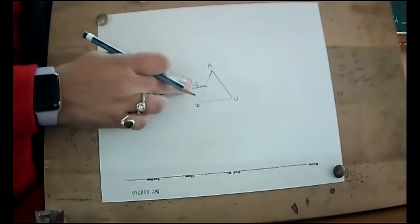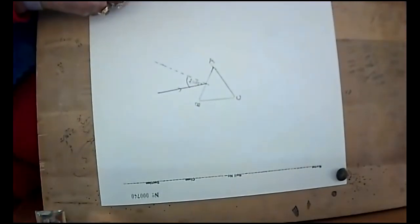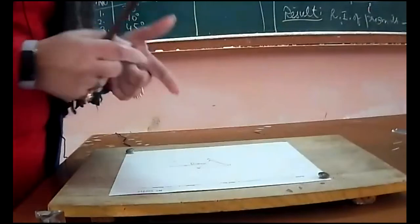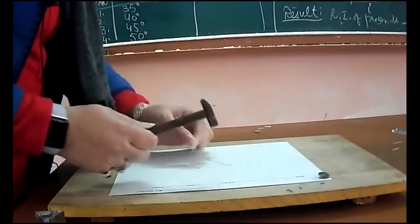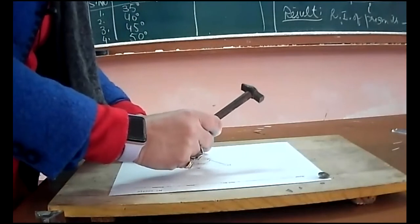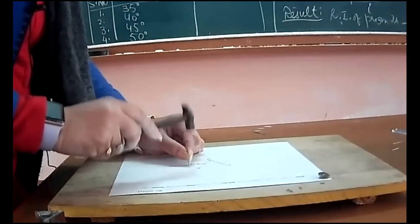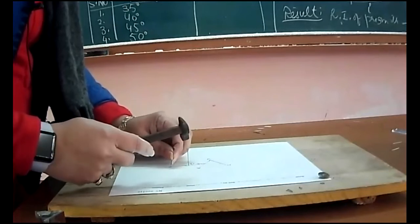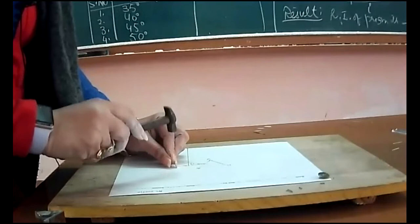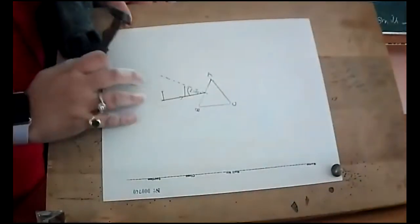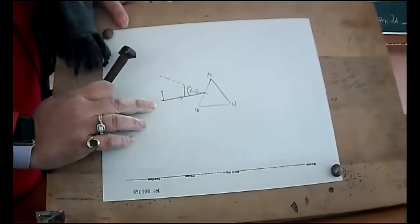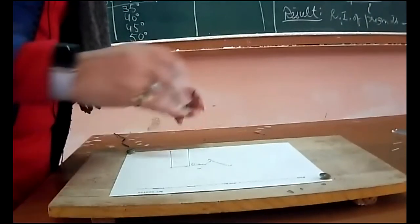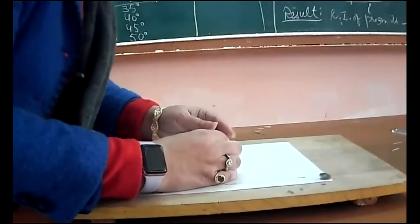Now we will fix two pins here on the incident ray with the help of a small hammer. I have fixed the pins like this. Now I will keep the prism over it, where there is a boundary.